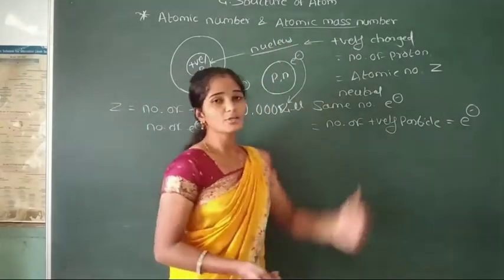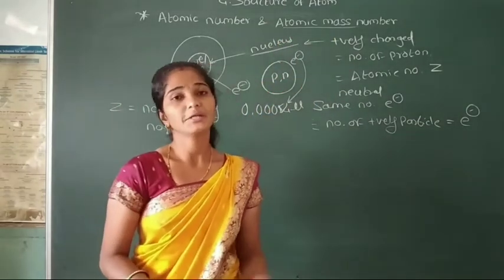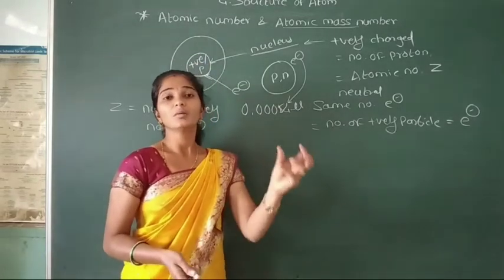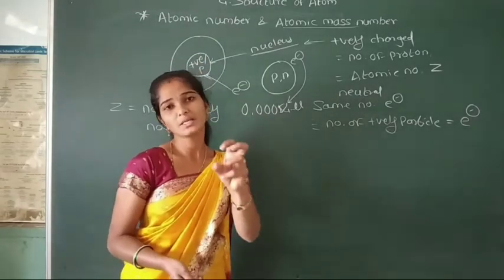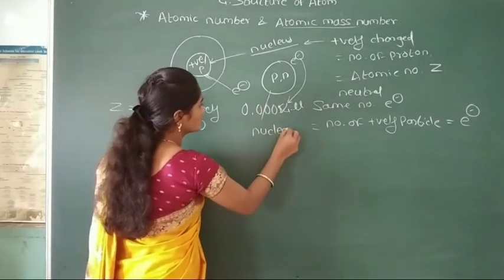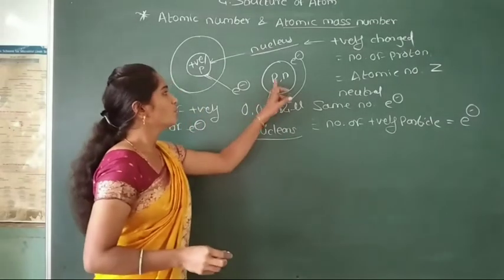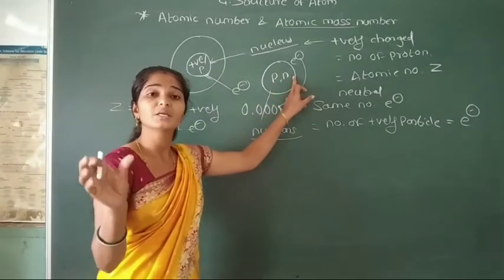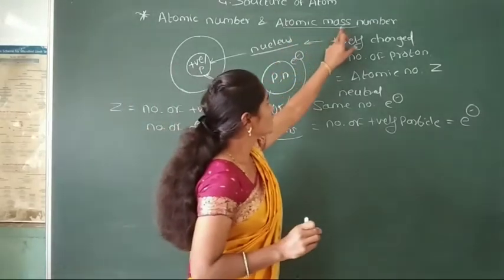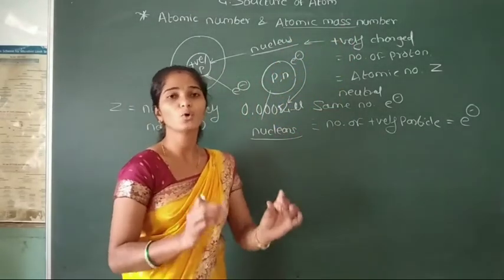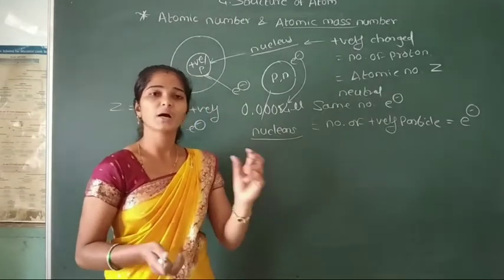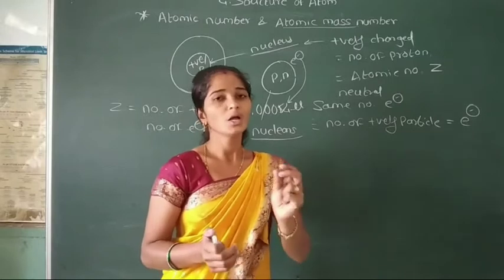The atomic mass of any element depends on, or is concentrated in, the number of nucleons present in the nucleus. In the nucleus, the number of protons and neutrons are present. The atomic mass of any element is concentrated only in the mass of nucleons — that means the mass of protons and the mass of neutrons.